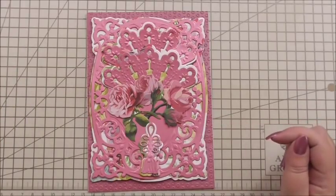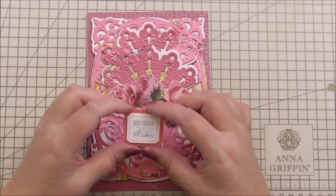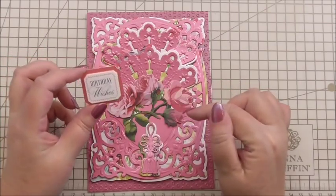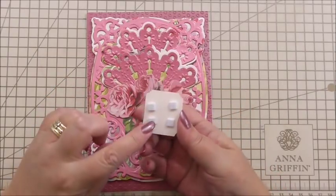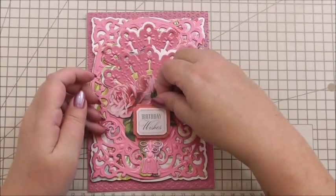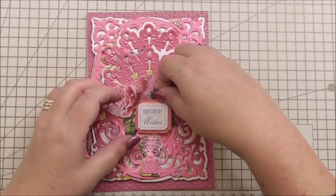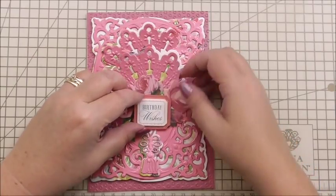Now for the sentiment. This is from the mini flower and sentiment stickers where we got the little flowers from, and it just says birthday wishes. Instead of using it as a sticker, I've got it on 3D foam, and I'm simply going to add that between our flowers. There we go, like so.